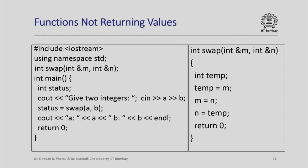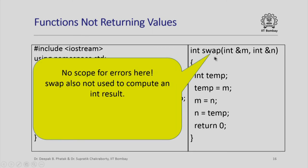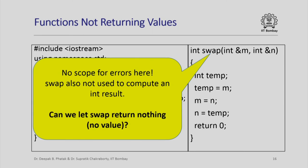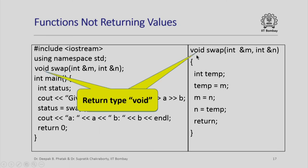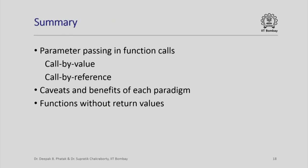Finally, looking at the swap function, there was no scope for errors and the return value of 0 was not meaningful — swap is not computing an integer result. C++ allows functions to return nothing at all: you declare the return type as void and simply return without an argument. In summary, this lecture covered parameter passing in function calls — the two paradigms call by value and call by reference, the caveats and benefits of each paradigm, and a brief glimpse of functions without return values.